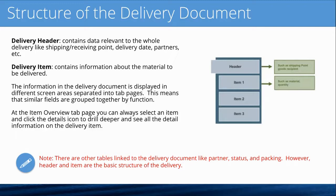Now we'll deep dive into the structure of the delivery document. Outbound deliveries and inbound deliveries have the same structure — they share most of the same database tables, and the UI screens and configuration often carry over. At the very top of a delivery document, at the header level, there is the delivery header. There is only one delivery header per delivery document, and it contains information like the shipping and receiving points, delivery dates, shipping dates, and partners such as the vendor or customer.